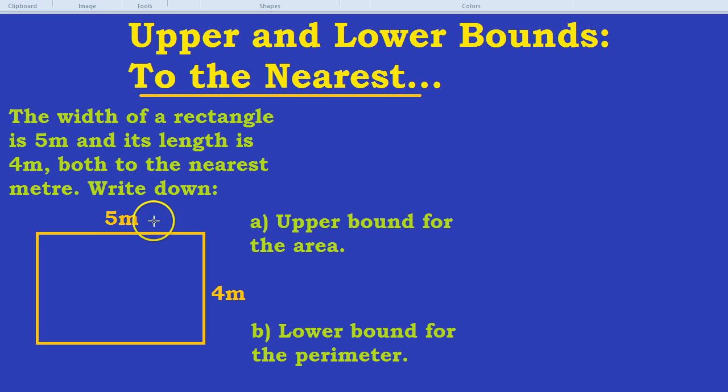First of all, let's focus on these numbers, 5 metres and 4 metres. And let's notice we're trying to find the upper bound. Here's the question you have to ask yourself. What's the biggest that that number can become, so that it would still round to 5 metres, to the nearest metre? How big can we make it?